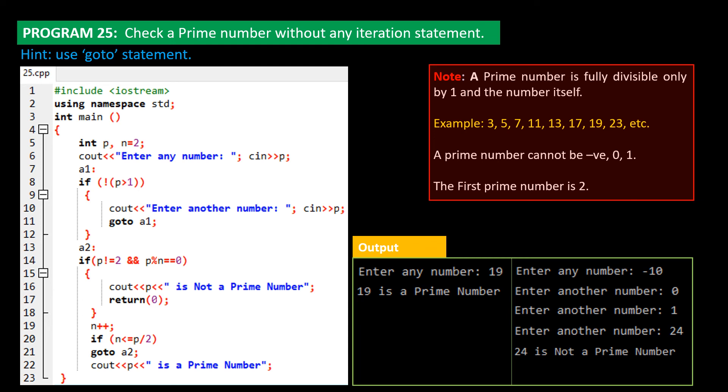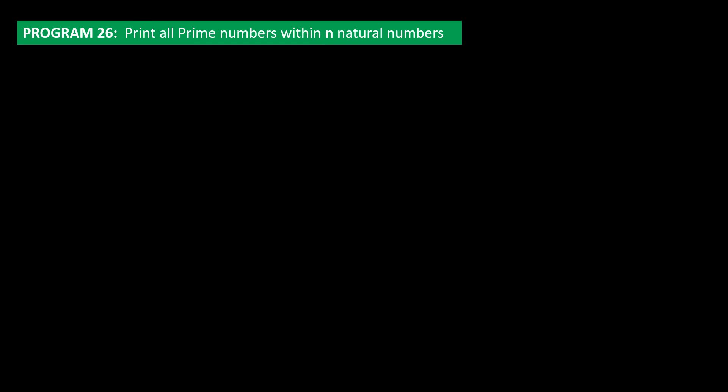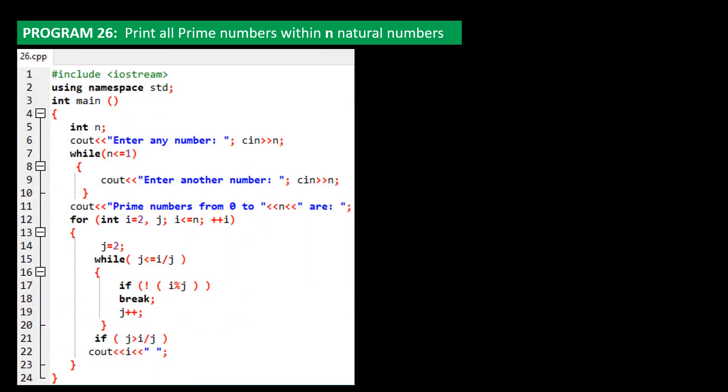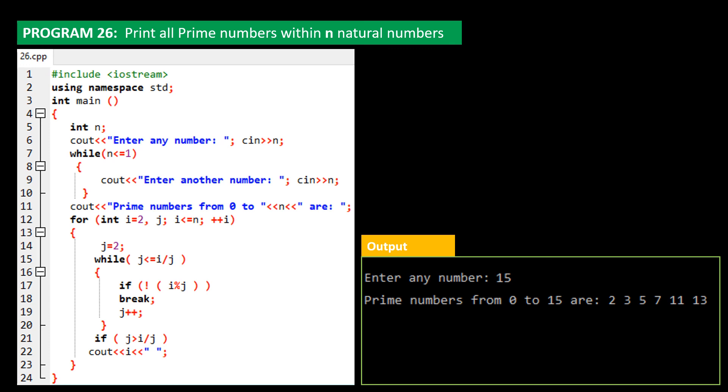Let's next move to program 26. Requirement is to print all prime numbers within n natural numbers. Here is the code, and this is the output. The user is prompted to enter a number. The user enters 15. Our program computes the result. It prints all prime numbers between 0 and 15. Carefully take a step-by-step review of the for loop block. On line 17, we have the if block which plays a very important role. Remember that the condition if i mode j means true or 1.